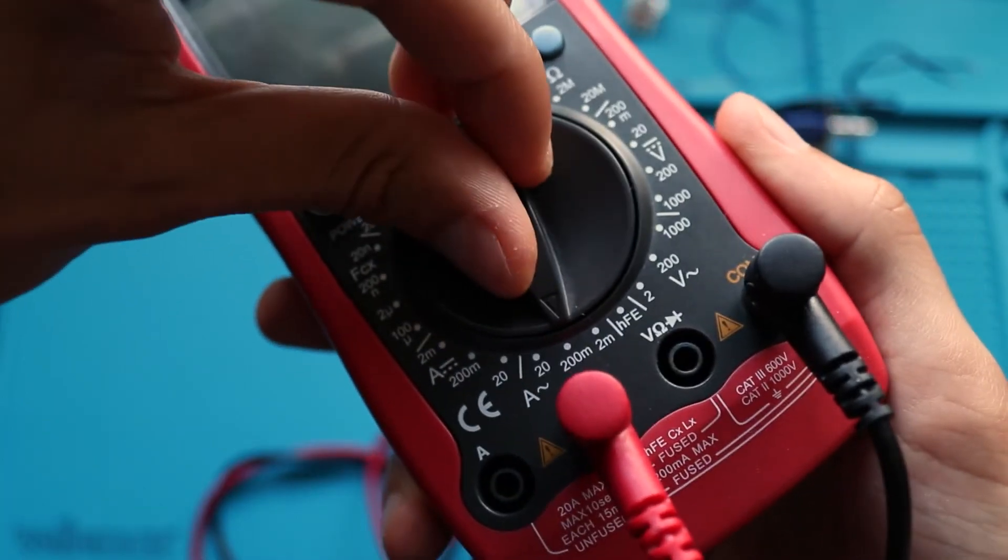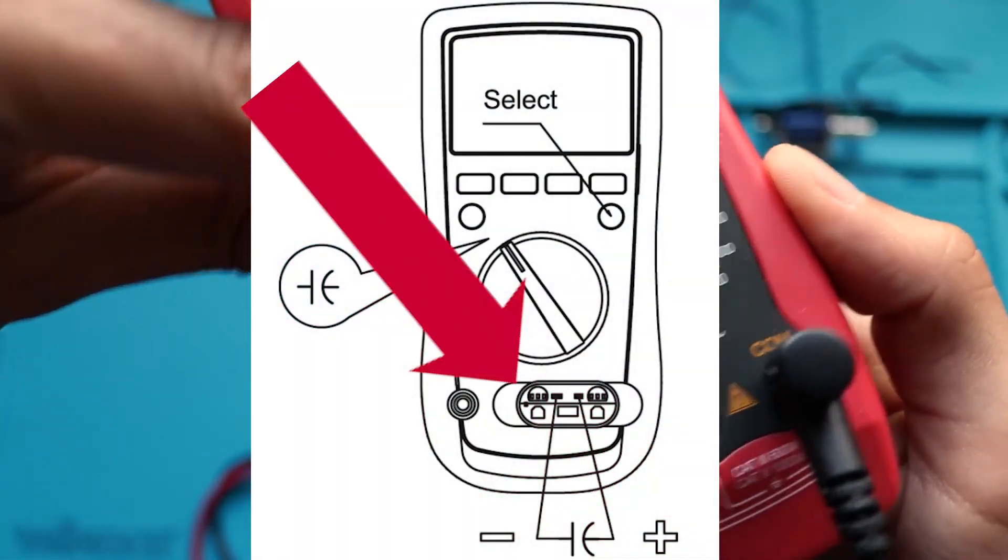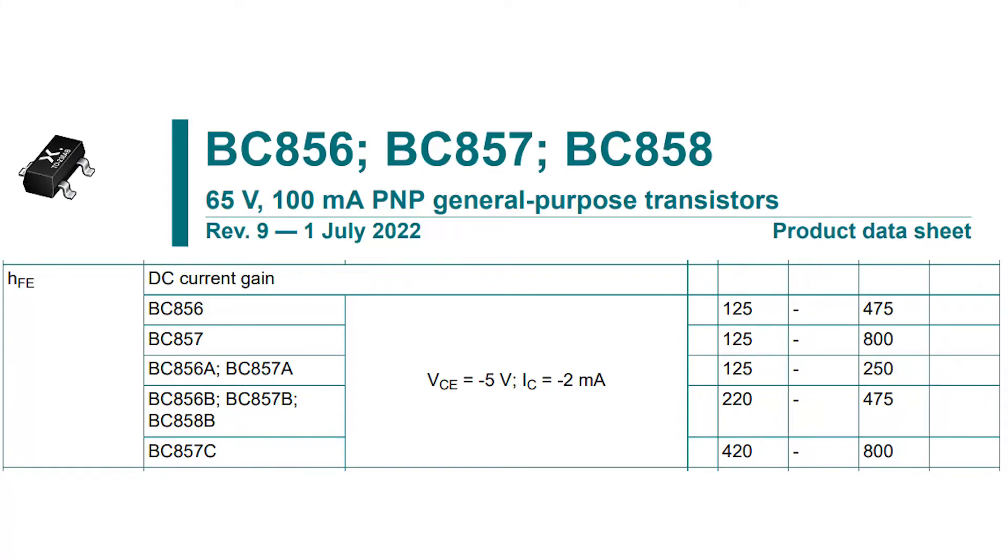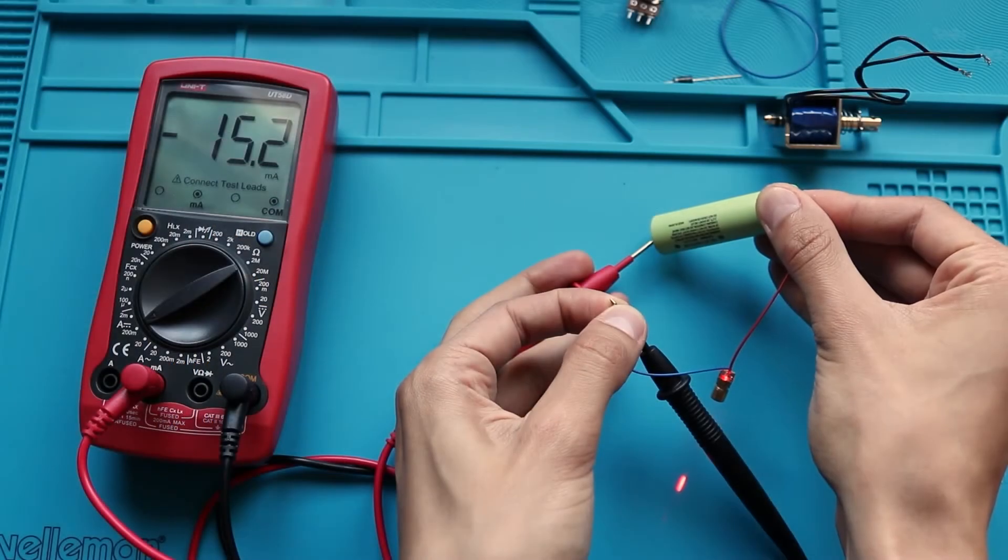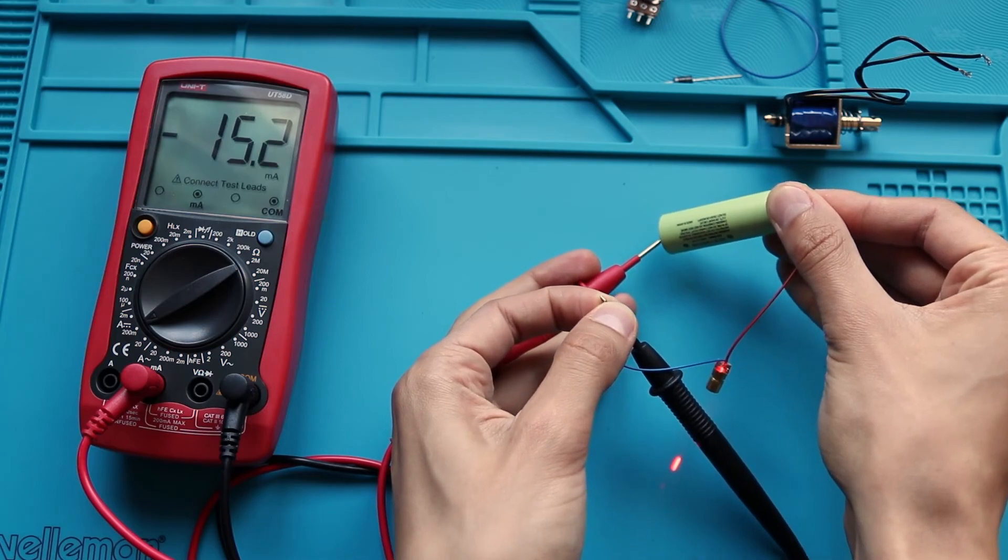To measure transistor amplification coefficient, you need an extender. But personally, I never use this function. It's always easier to look at the transistor datasheet and find out the value there. So now you know everything about the multimeter. I hope it was useful. Bye.